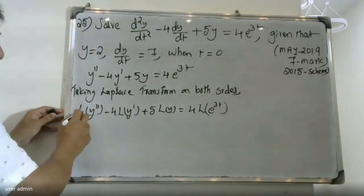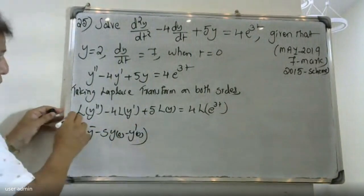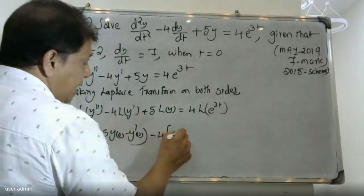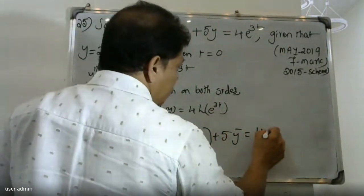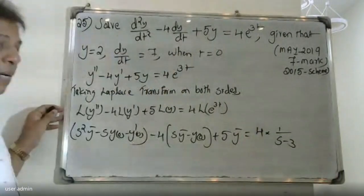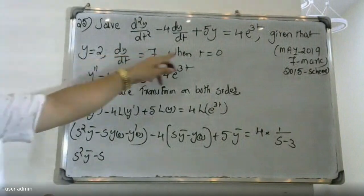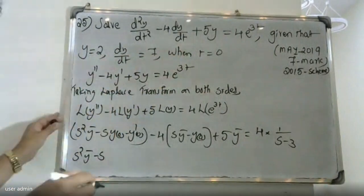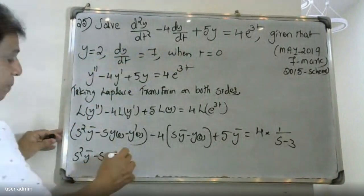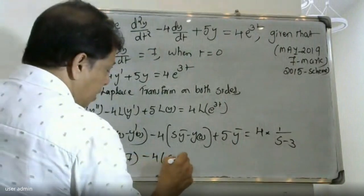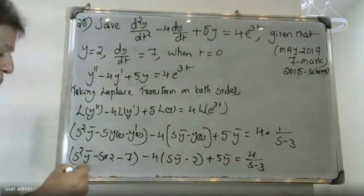From the standard Laplace transform table, L of y double dash equals s squared Y-bar minus s·y(0) minus y'(0), which equals 4 times 1 over (s minus 3). Substituting initial conditions, we get s squared Y-bar minus 2s minus 7 minus 4 times (s·Y-bar minus y(0)) plus 5·Y-bar equal to 4 over (s minus 3).